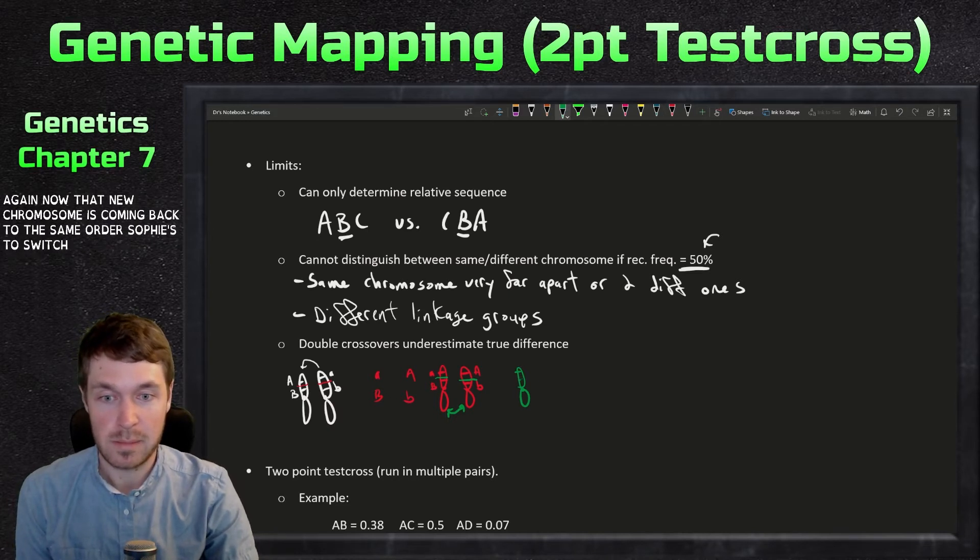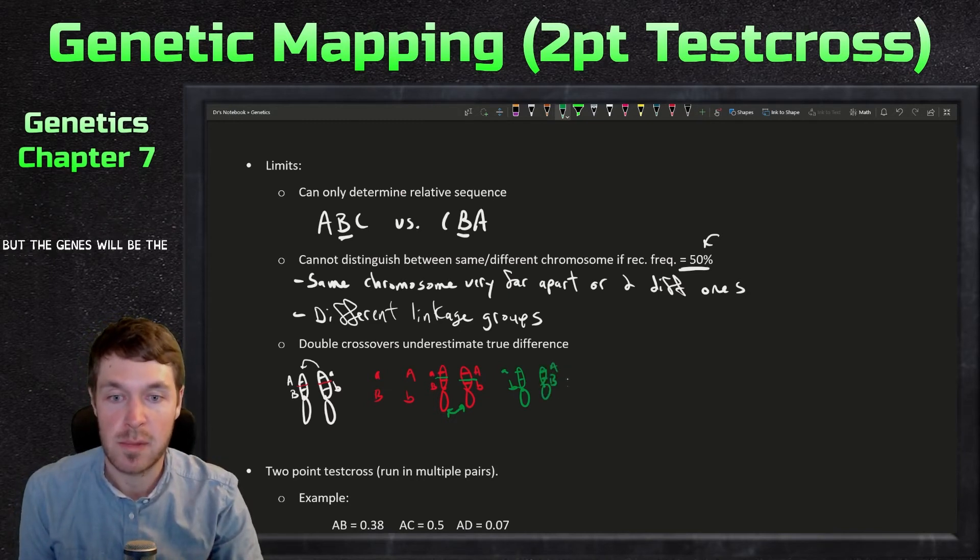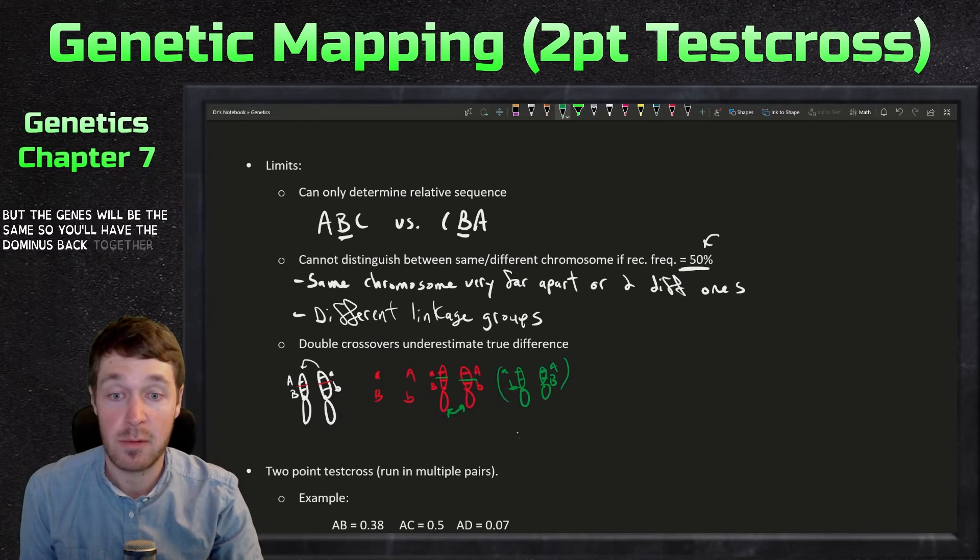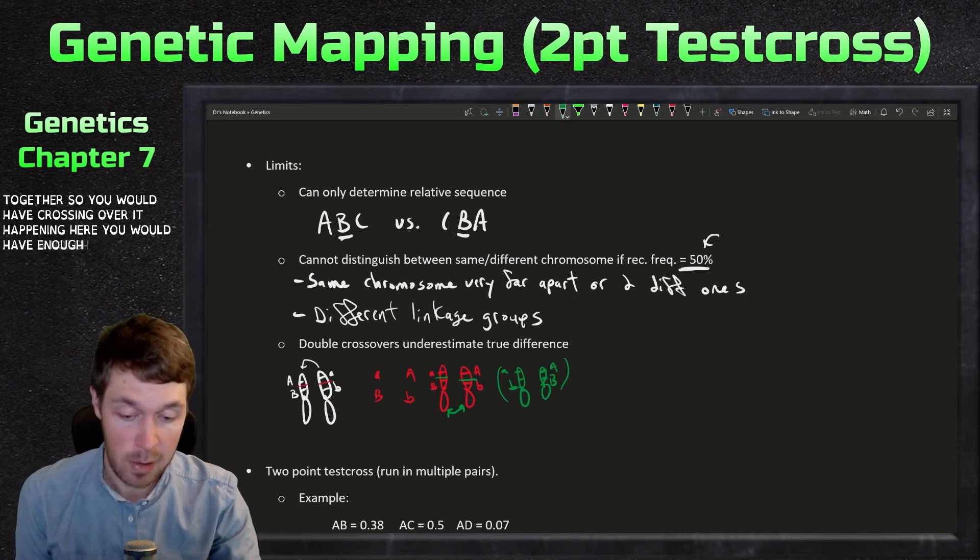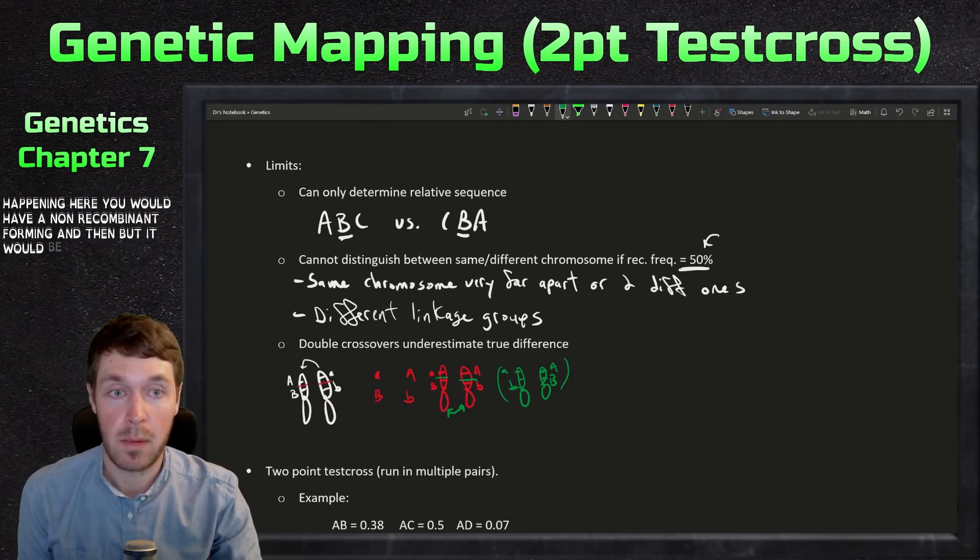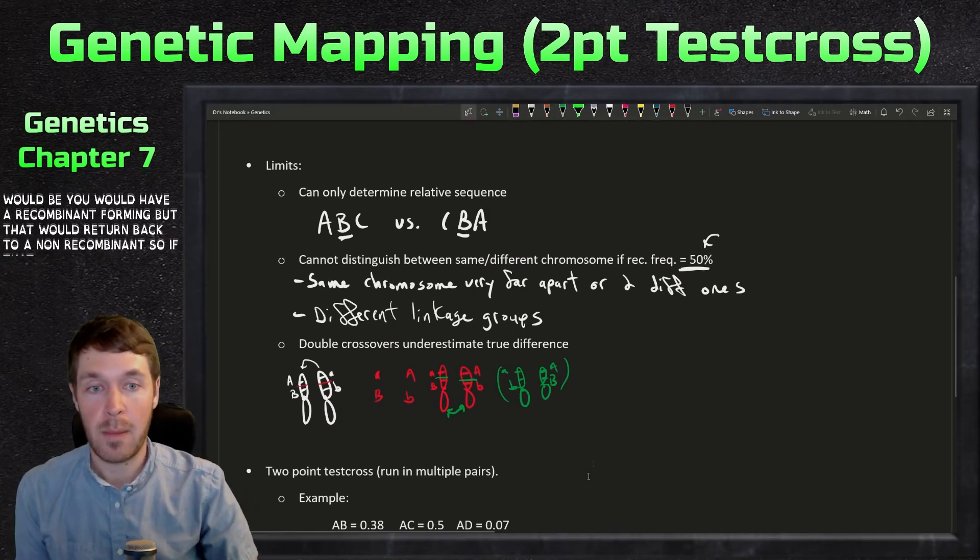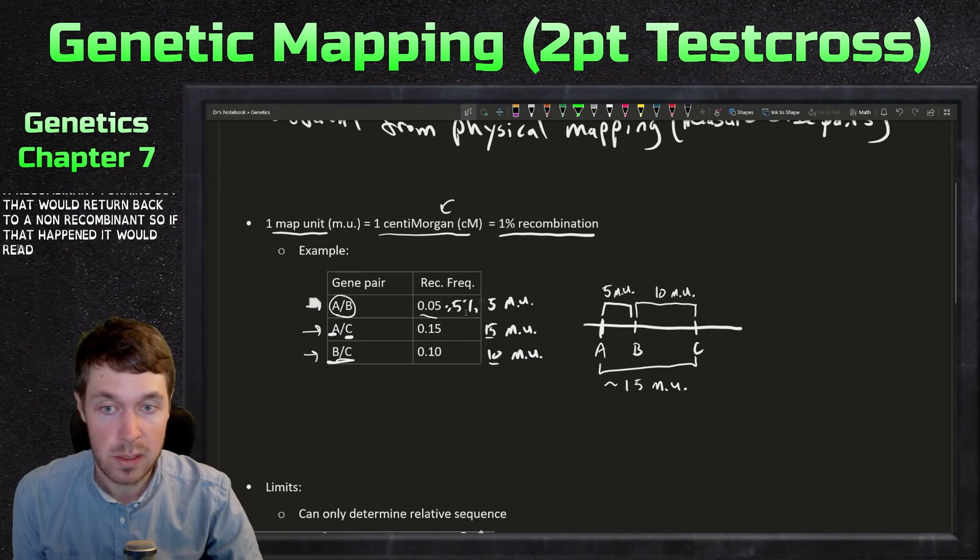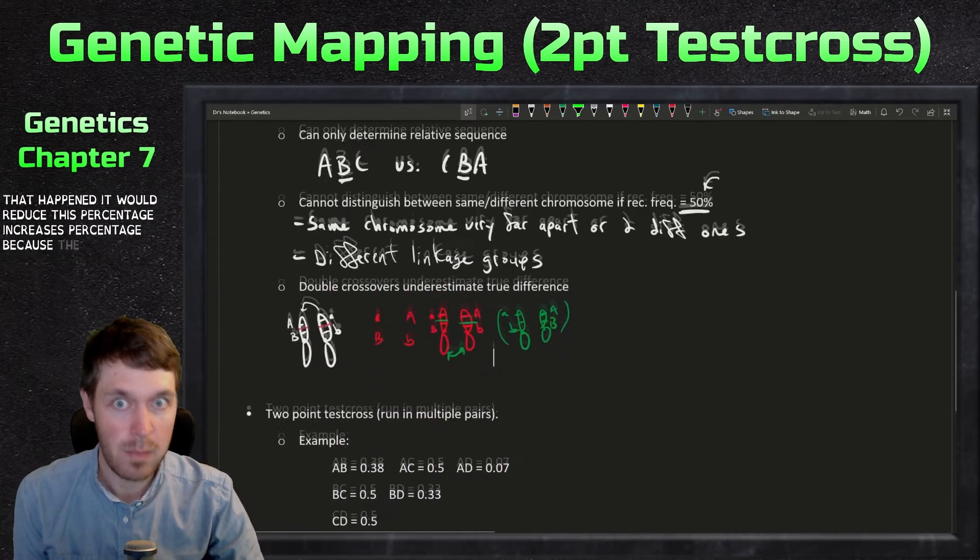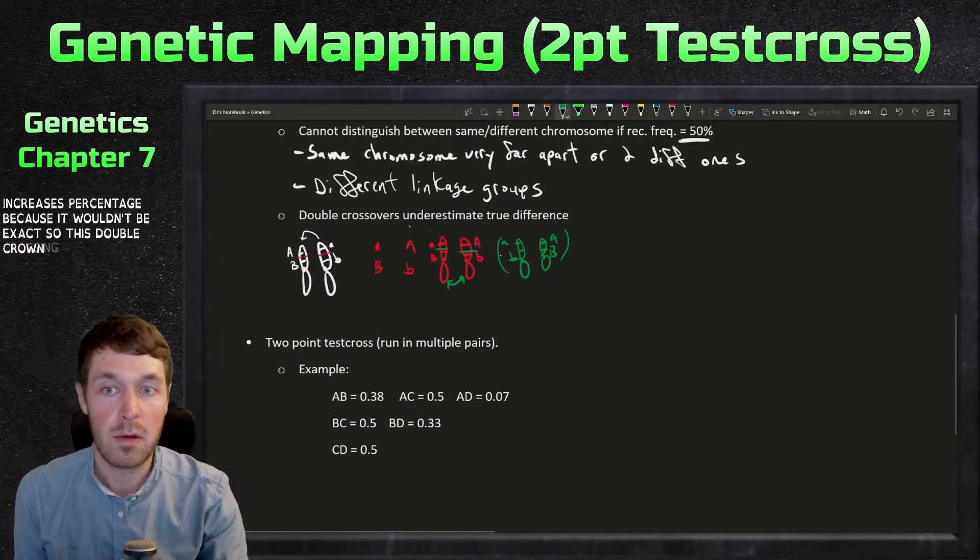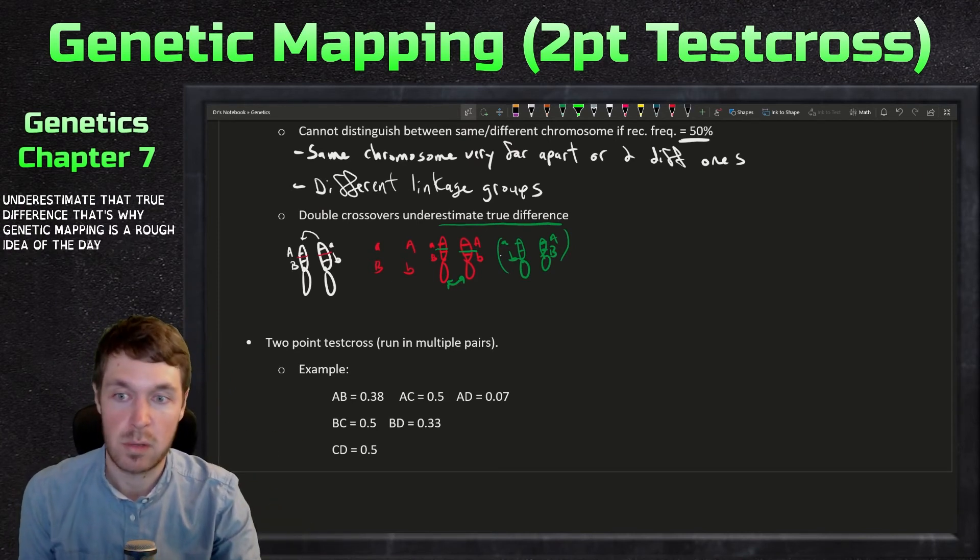Now that new chromosome is going to be back to the same order. So if these two are switching, they'll be flipped around, but the genes will be the same. So you'll have the dominance back together and the recessives back together. So you would have crossing over happening here. You would have a non-recombinant forming, but you would have a recombinant forming, but then it would turn back to a non-recombinant. So if that happened, it would reduce this percentage, or increase this percentage because it wouldn't be exact. So this double crossing over can underestimate that true difference.